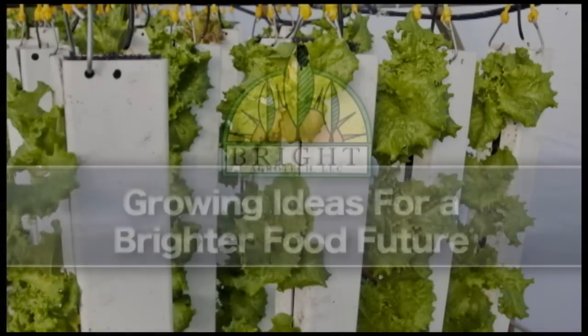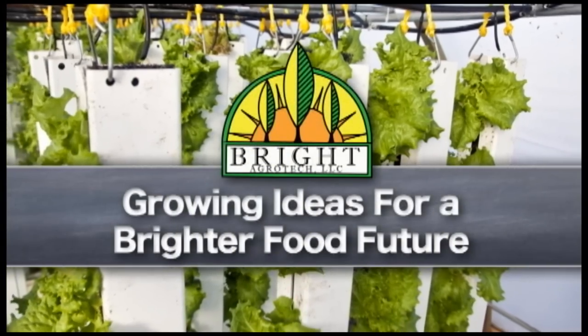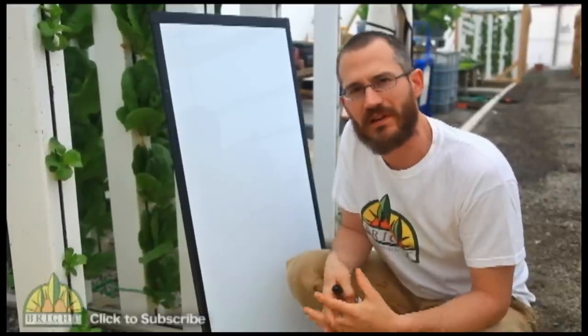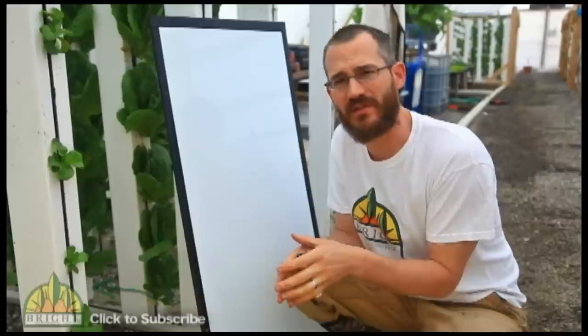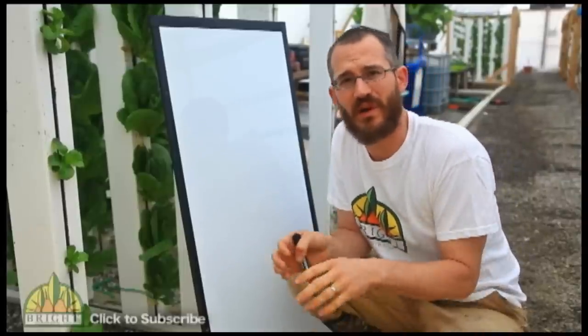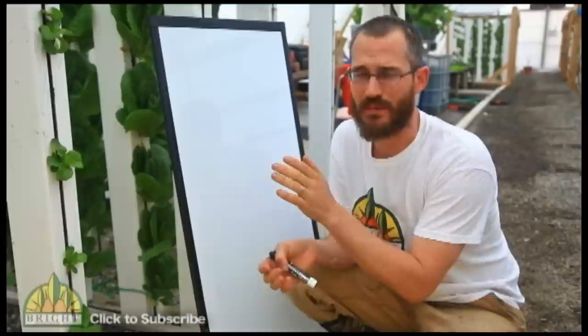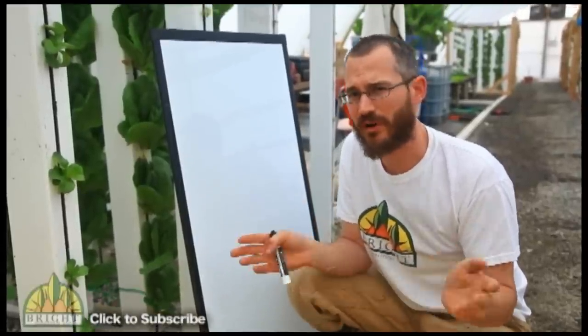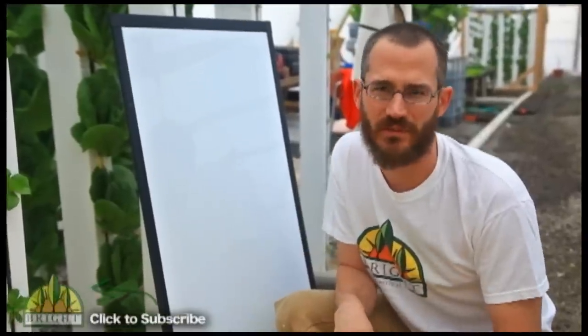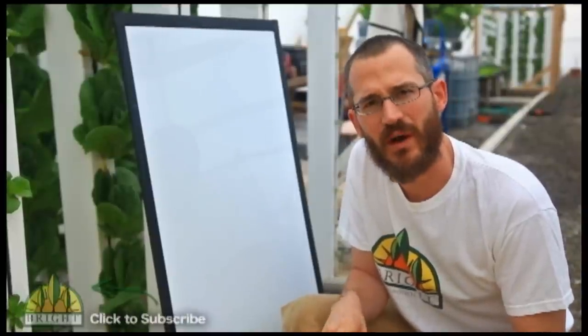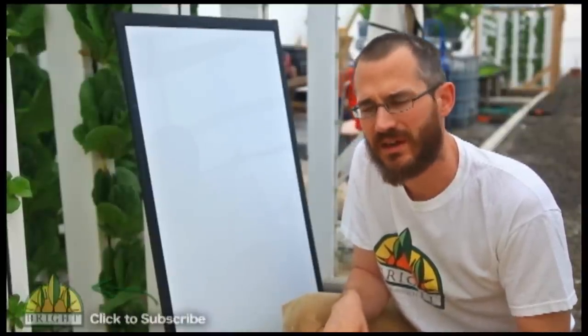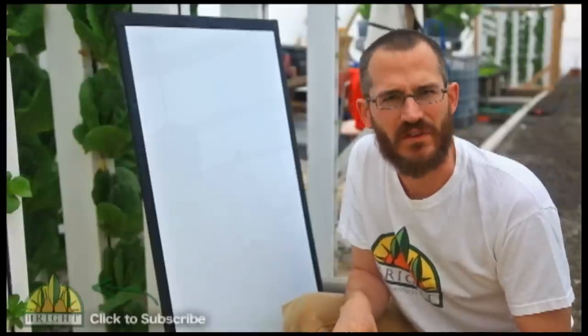Hi, this is Nate Storey with Bright Agritech and today we're going to talk about ammonia. So ammonia is a really important thing to understand in aquaponic systems because it's one of the primary things that the fish are producing that's both toxic but also the beginning step in this chemical reaction that leads to our plants having proper nutrition. There's a lot of misunderstandings out there about ammonia. So today I'm just going to talk really quickly about what ammonia is and what ammonium is and what they do in the system.